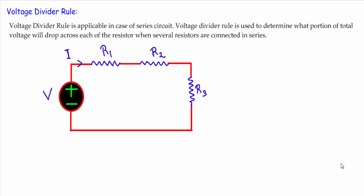Here I will talk about the voltage divider rule. We have two words: voltage and divide — meaning a voltage will divide in some way. To determine how a total voltage will divide in a circuit, we apply the voltage divider rule. This rule is applicable only in a series circuit. The voltage divider rule is used to determine what portion of the total voltage will drop across each resistor when several resistors are connected in series.